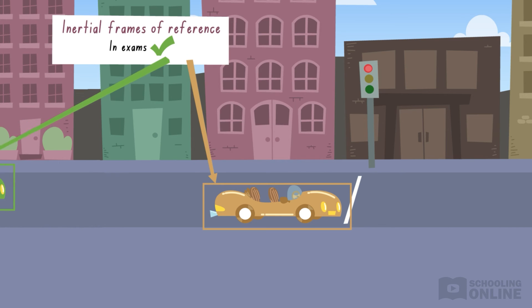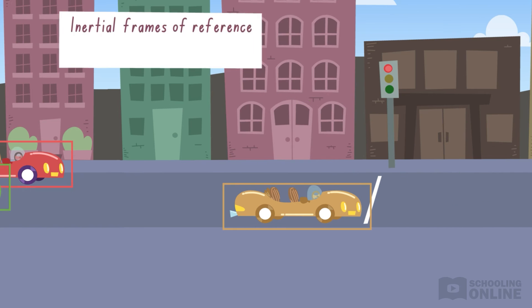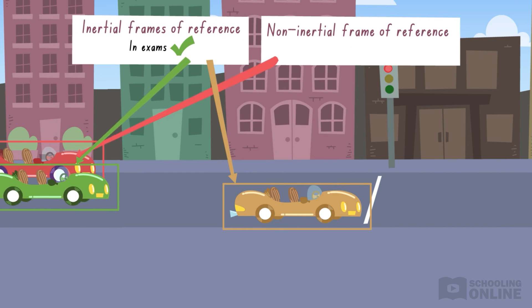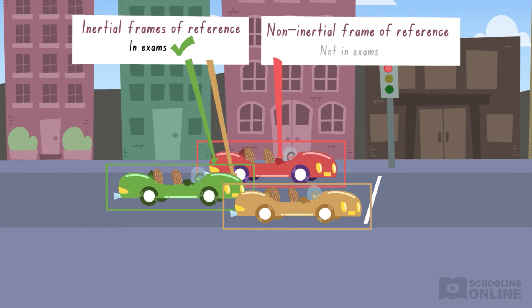In this lesson, we will calculate the relative velocities of objects as measured in different inertial frames of reference. We won't consider non-inertial frames of reference because they are complicated.